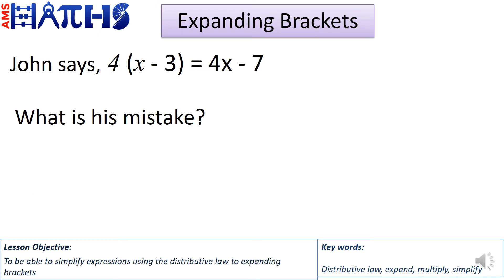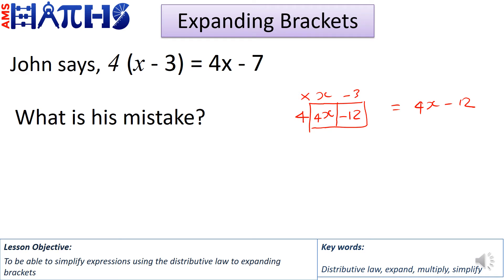Let's look at this question. John says 4 times x minus 3 is equal to 4x minus 7. We need to check for his mistake. When expanding the brackets, we have two boxes for the terms x and minus 3, with 4 in front. So 4 times x gives 4x, and 4 times minus 3 gives minus 12. The answer should be 4x minus 12. John's mistake was multiplying 4 times minus 3 incorrectly — he got minus 7 instead of minus 12.